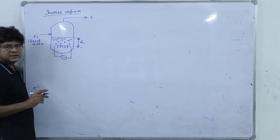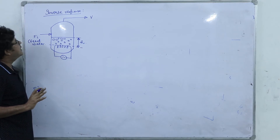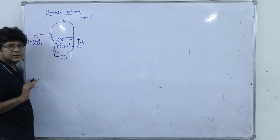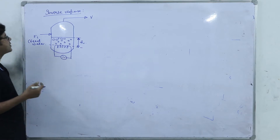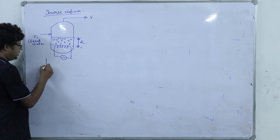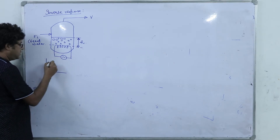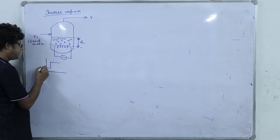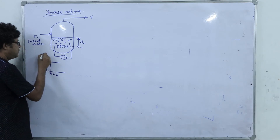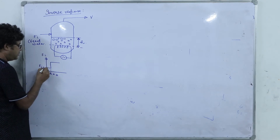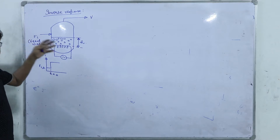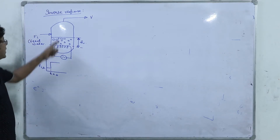Now, in the steady state F_i and V are the same — the inflow and outflow mass flow rates are the same. So there is no accumulation and the level remains the same. Now think that we have increased F_i by a step input. Say this is t equal to 0, this is F_i and F_i_s, and we have given a certain step height. Our objective is to answer: what will happen to H?